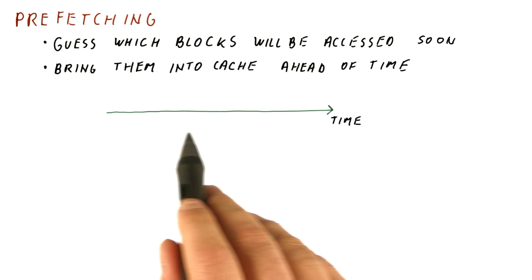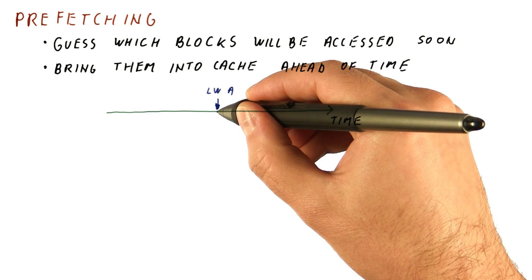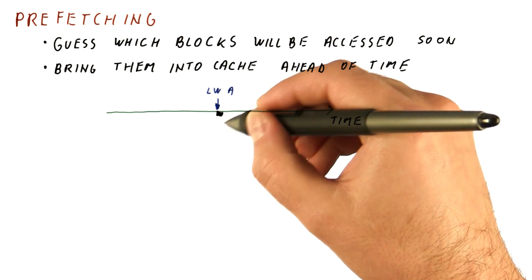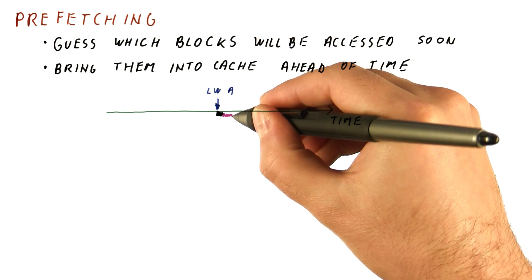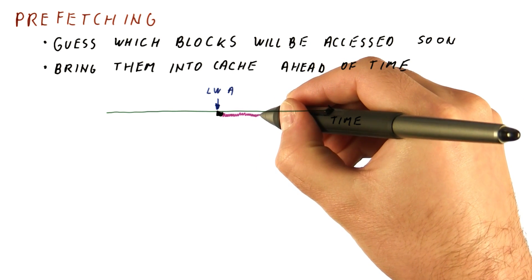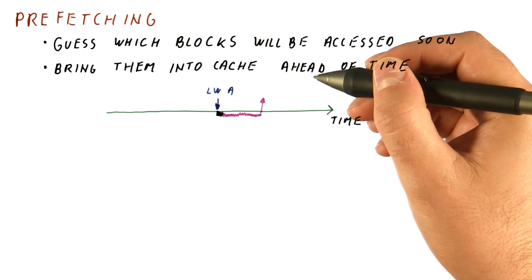So with no prefetching, if time goes to the right, we might have an access here, let's say load word A. Then we check quickly whether it's in our cache, and if it is not, we will go to memory and spend a lot of time waiting for it until it comes back. So here we can supply the data to the processor.